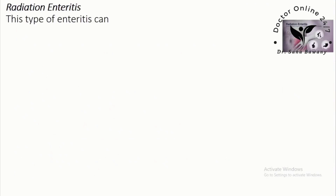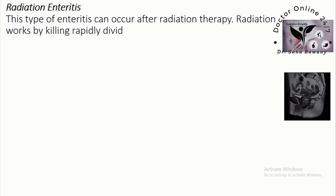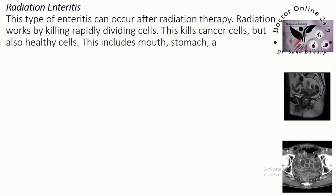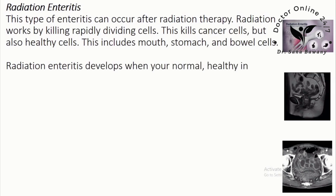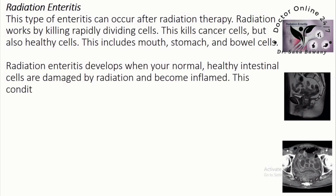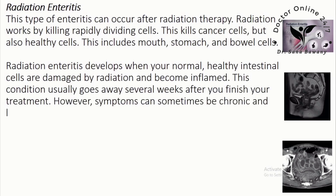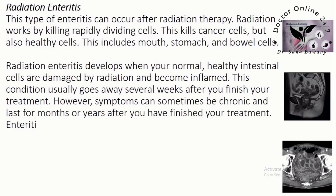Radiation Enteritis: This type of enteritis can occur after radiation therapy. Radiation works by killing rapidly dividing cells — this kills cancer cells but also healthy cells, including mouth, stomach, and bowel cells. Radiation enteritis develops when healthy intestinal cells are damaged and become inflamed. This condition usually goes away several weeks after finishing treatment; however, symptoms can sometimes be chronic and last for months or years.